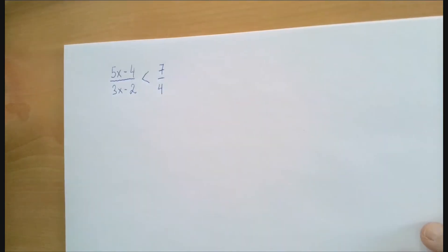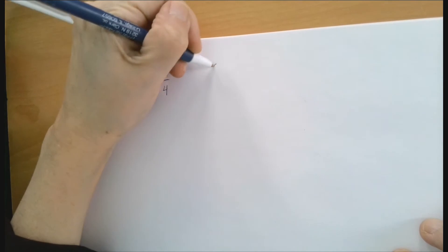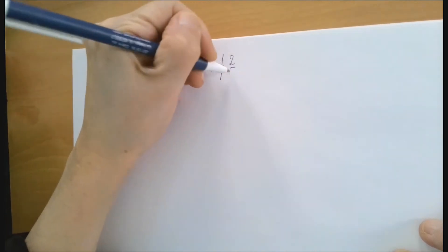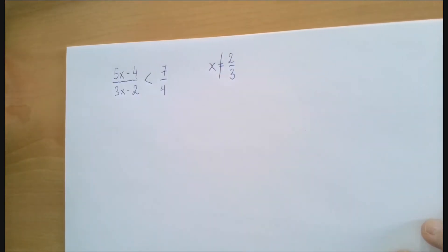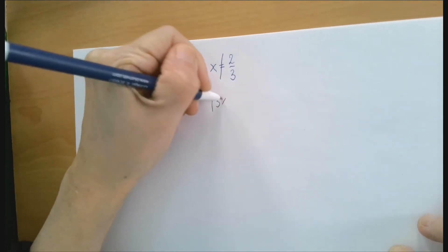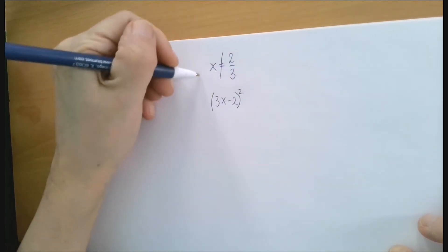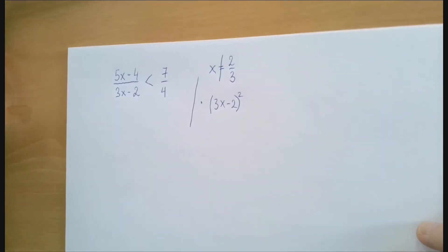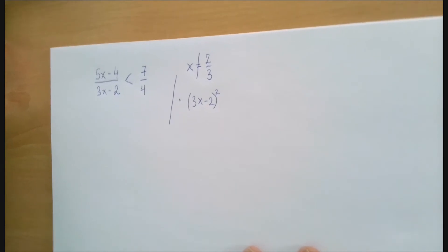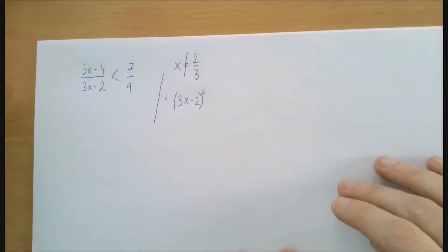So the first step here is to acknowledge that x cannot be 2 over 3. x equals 2 over 3 cannot be a solution because it makes the denominator 0, which means we would get undefined is less than 7 over 4. So that's not a solution. Now why is that important? Because in order to gain control over whether we multiply by something positive or negative, we're going to multiply by 3x minus 2 to the second power. That is positive every time it's not 0. We already know that x is not 2 over 3. So we're going to multiply by 3x minus 2 squared, which is for sure a positive quantity.